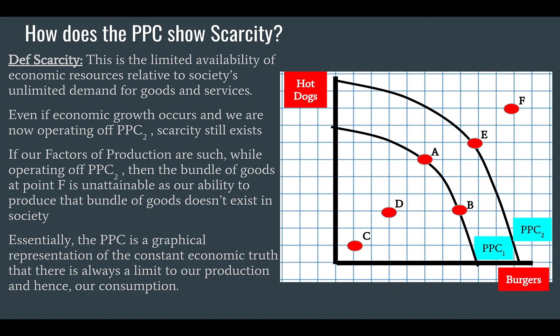If we look at the difference between PPC one and PPC two, basically there's been an increase in the quantity and quality of factors of production, or an improvement in the state of technology. So scarcity is less — but when compared to infinite demands or infinite wants and needs, you're never really lessening it, I suppose.